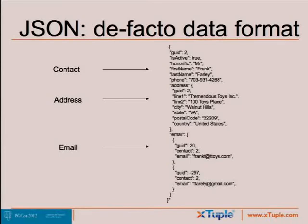A lot of talk about JSON these days — Douglas Crockford spec'd that out. It's the de facto format if you're working with JavaScript because JSON is JavaScript Object Notation. A contact record represented in JSON has the contact at the top, then an address indented beneath it with curly braces, and an email array inside square brackets with two addresses. This is the format we really need to work with in a JavaScript environment.